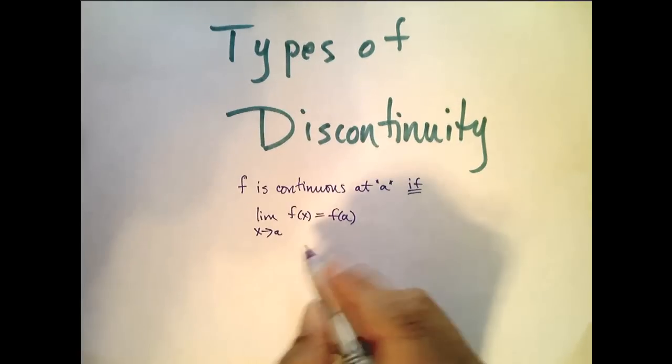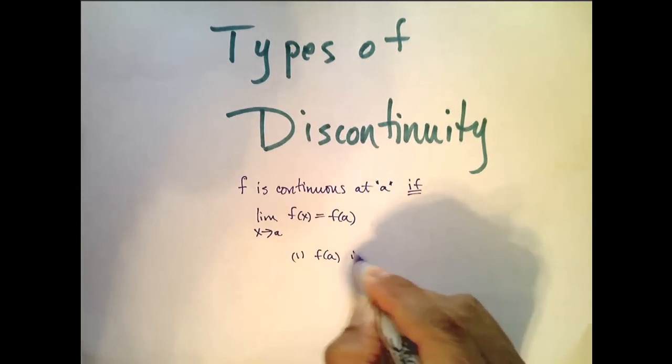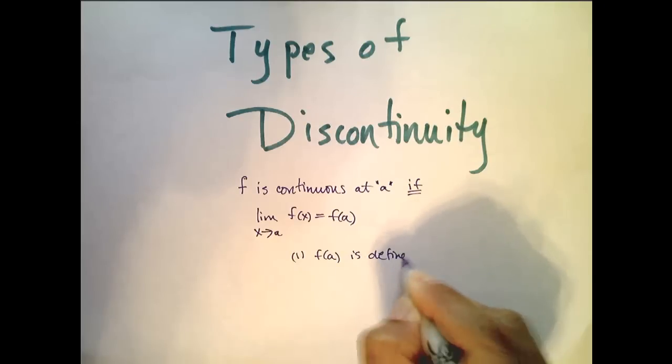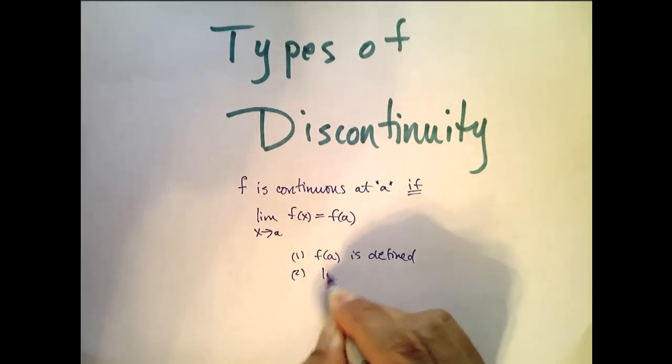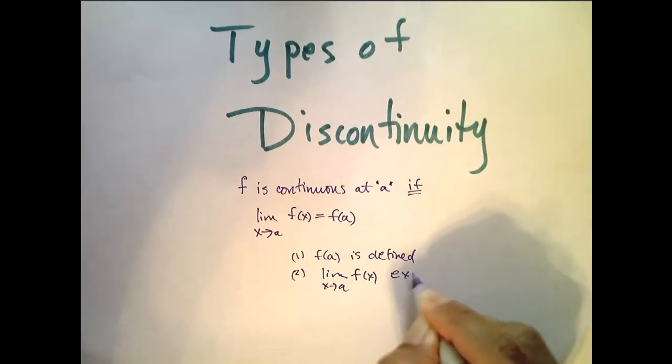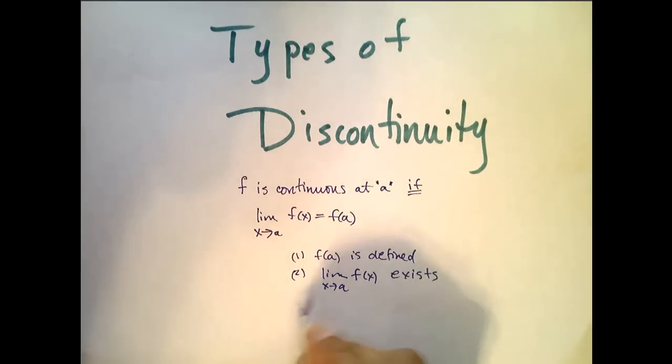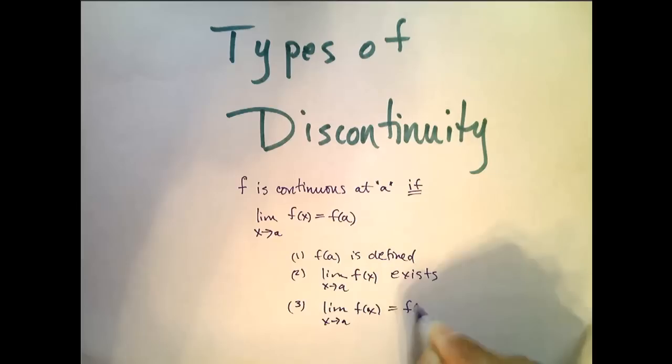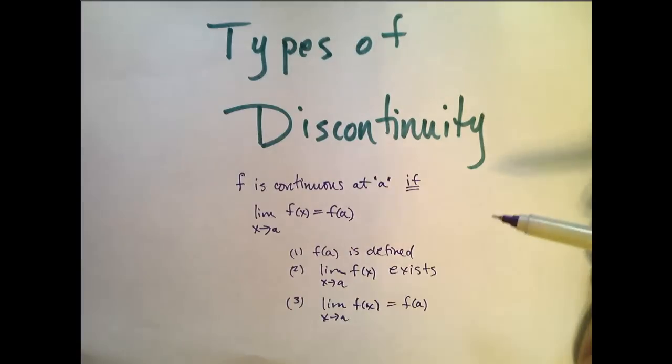And remember the three things that told us: one, f(a) is defined. Two, this limit as x approaches a of f(x) actually exists. And third, that limit that exists goes to the function value at a. All three of those things are necessary for a function to be continuous at a.